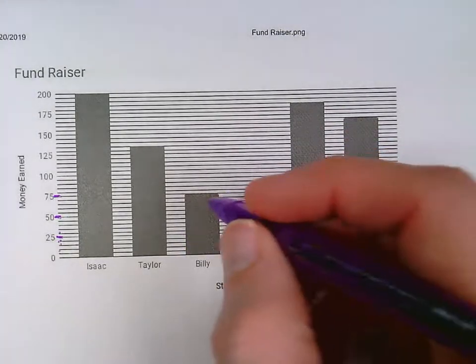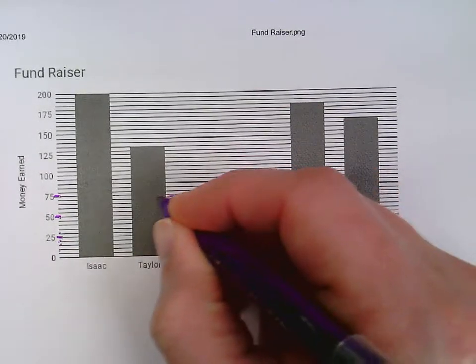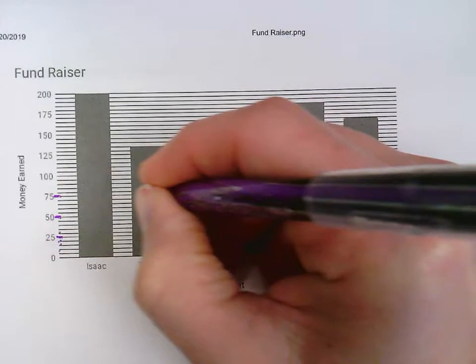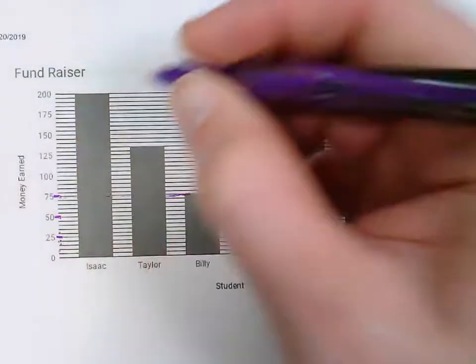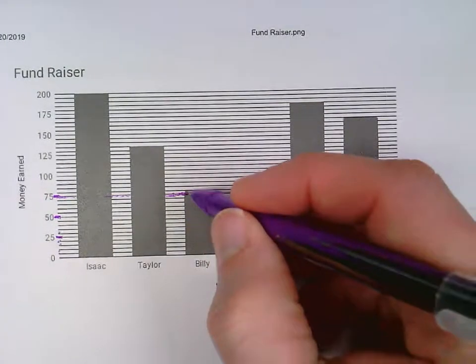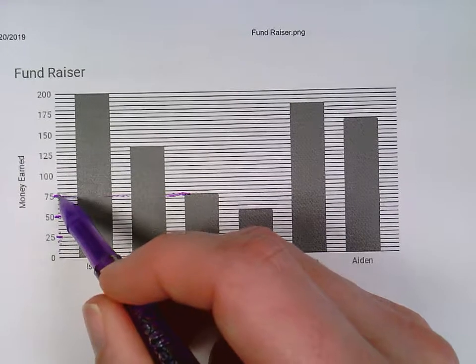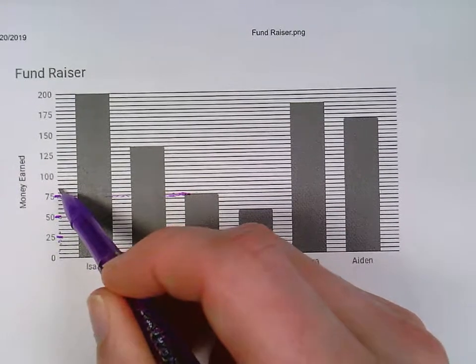So each one of those lines there is 25. So if I wanted to figure out how much money Billy raised, I would go over and I would see he is right on that line there. So he's right on 75. But if it was 1 higher or 2 higher, I would just count 75, 80, 85. So I'd count by 5s there.